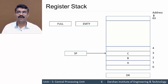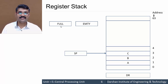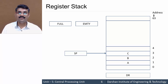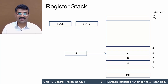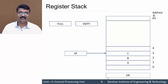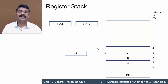The FULL flag is 0 when the stack is not full, and 1 when it is full. Similarly, the EMPTY flag indicates whether the stack is empty — 0 means not empty, 1 means empty. Both flags cannot be 1 simultaneously, nor can both be 0. We also have a data register DR through which data is transferred to and from the stack.